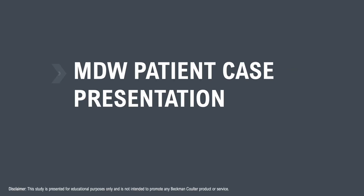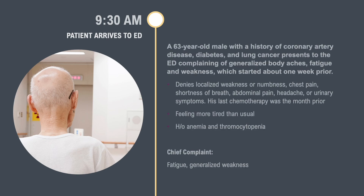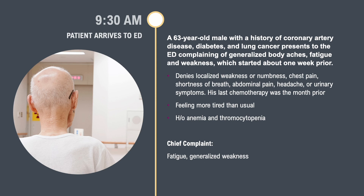Let's talk about a patient case demonstrating MDW's utility in the acute care setting. You're working a busy shift in the emergency department. At 9:30 in the morning, a 63-year-old male arrives with a history of coronary artery disease, diabetes, and lung cancer, presenting with generalized body aches, fatigue, and weakness that started about one week ago. He denies localized weakness, numbness, chest pain, shortness of breath, abdominal pain, headache, or urinary symptoms. His last chemotherapy was about a month ago. He also has a history of anemia and thrombocytopenia. His chief complaint is essentially fatigue and generalized weakness.